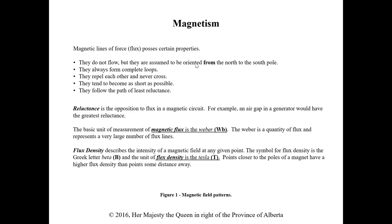When you push two like sides of a magnet together, the lines don't cross — they actually bend and want to return to their shortest position. There is a force that tries to push them back. They follow the path of least reluctance. Reluctance, by definition, is the opposition to flux in a magnetic circuit — they want low reluctance for a better magnetic field. An air gap in a generator has high reluctance because it's harder to produce a magnetic field in air compared to a steel magnetic core.